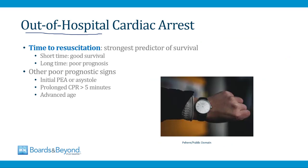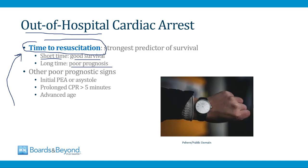Many cardiac arrests happen outside the hospital, and patients with out-of-hospital cardiac arrest often do not survive because there's no one around to perform CPR. For your board exams, the time to resuscitation is the strongest predictor of survival of an out-of-hospital cardiac arrest — early resuscitation leads to improved survival, while a long delay means poor prognosis. Other poor prognostic signs include an initial rhythm of PEA or asystole, failure of spontaneous circulation to return after five minutes of CPR, and advanced age.